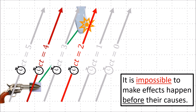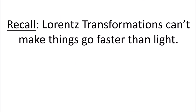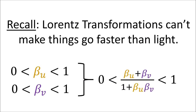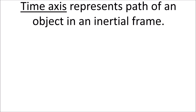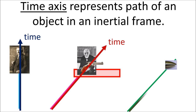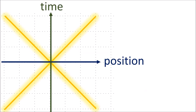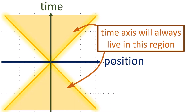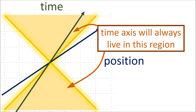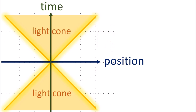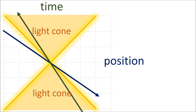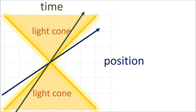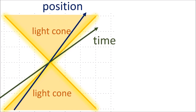However, even in special relativity we cannot make effects happen before their causes. Since nothing can go faster than the speed of light, the time axis is always going to exist within the light cone region of the spacetime diagram — the region containing all events between a beam of light fired to the left and one fired to the right. Likewise, the position axis is always going to exist outside the light cone. It is impossible to make the time and position axes cross the 45-degree line representing a beam of light.